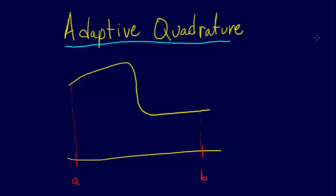The other methods that we've talked about so far have always used equally spaced points. And so I've drawn a function here so you can see an example of when that might not be a good idea.